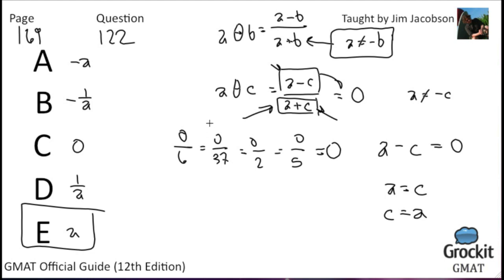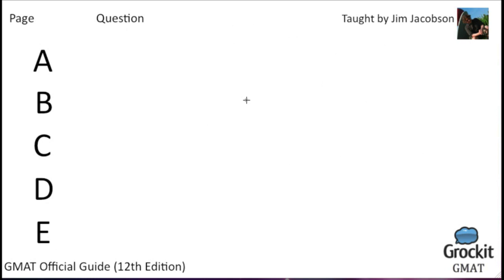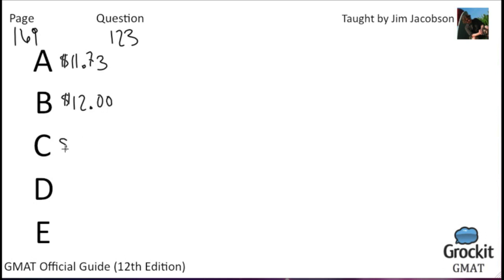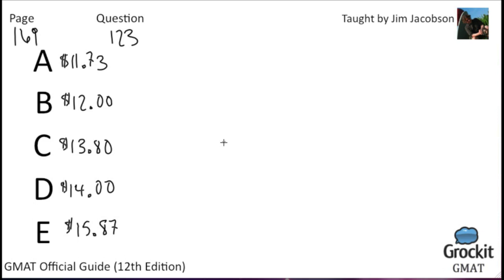On to the second column on page 169, question number 123. Answer choices: $11.73, $12, $13.80, $14, and $15.87. The price of lunch for 15 people was $207, including a 15% gratuity for service. What was the average price per person excluding the gratuity? Gratuity is just another word for tip.